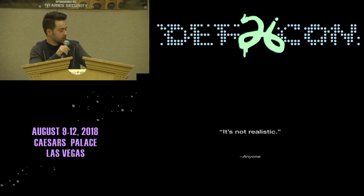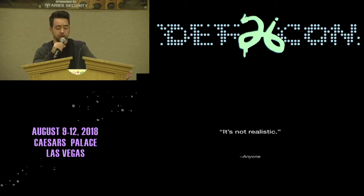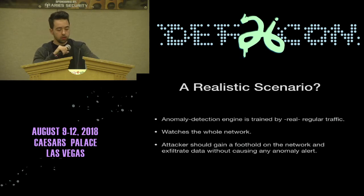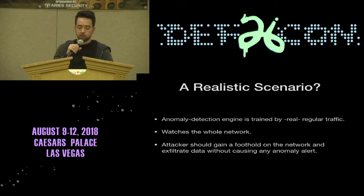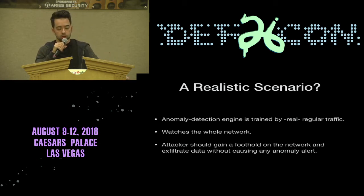But we can say this scenario is not realistic. How can an attacker know when the traffic is going to be trained? It's hard. We can count this as a malicious insider threat. In a realistic scenario, we expect that an attacker can't know when the traffic training is done. Therefore, we need to focus on post-training evasion. In this scenario, we assume that a trained anomaly-based system watches the whole network, and as an attacker, we should gain a foothold and exfiltrate data without causing any anomaly alerts.